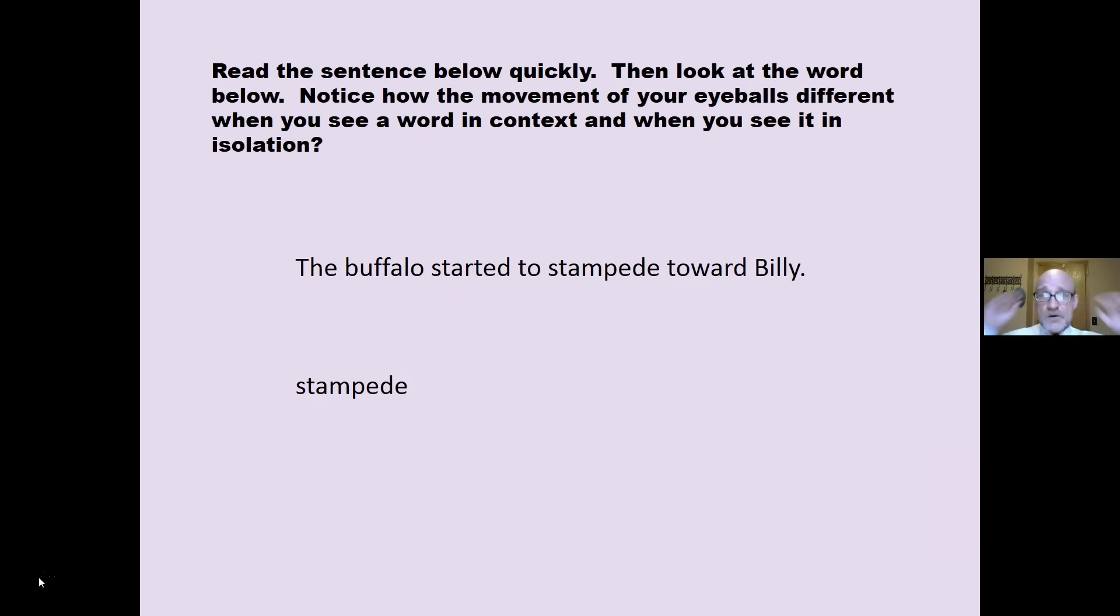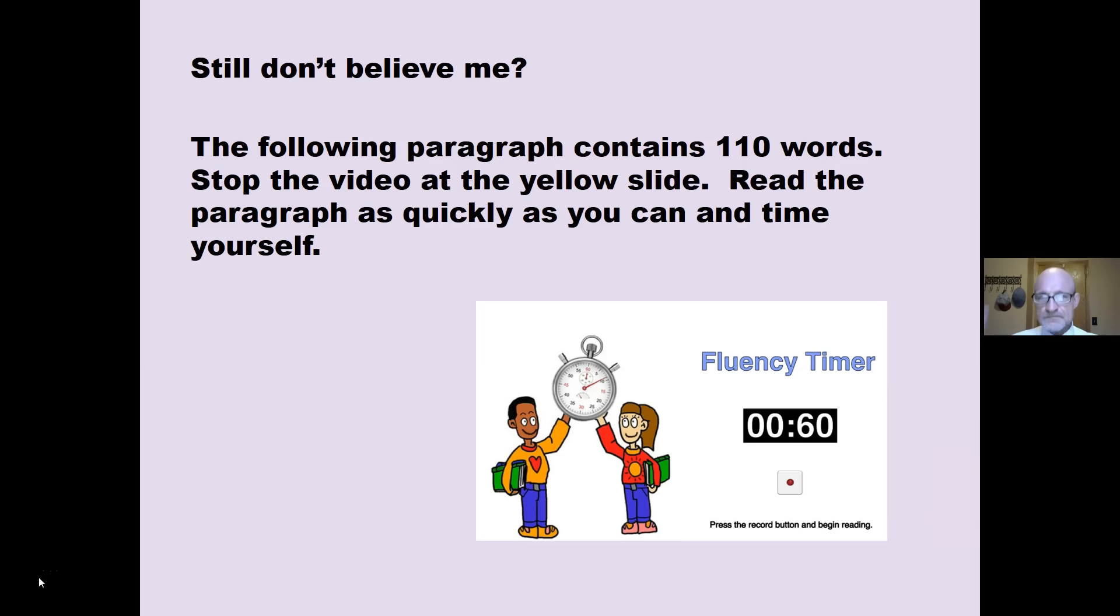Now, read the sentence below. Then, look at the word below that. Notice how your eye movement differs when you see that same word in context and when you see it in isolation. Stop the slide and try that. See how it works. Notice your eyeballs.